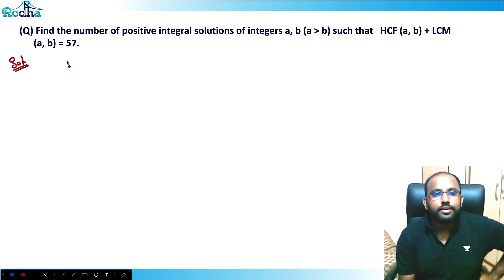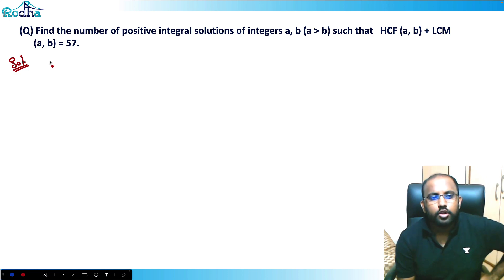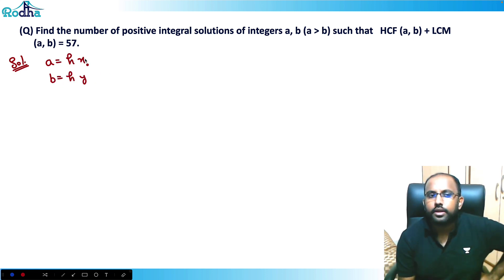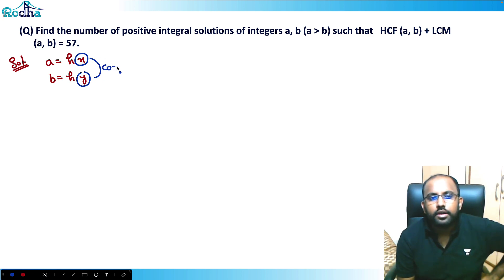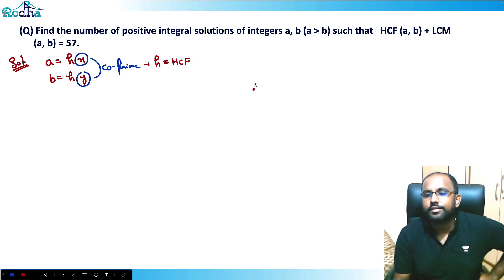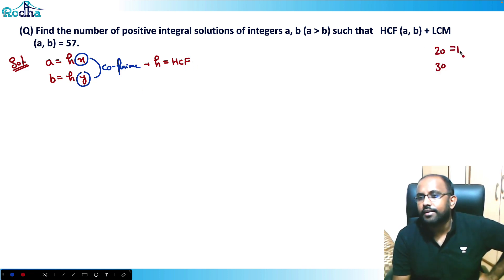The fundamental concept here: for two numbers a and b, let a = h·x and b = h·y, where x and y are co-prime. Then h is the HCF. For example, 20 and 30 can be written as 10×2 and 10×3 — since 2 and 3 are co-prime, 10 is the HCF.